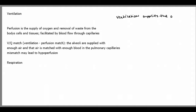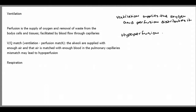You can think of ventilation as supplying the oxygen and perfusion as distributing it. The VQ match is when the alveoli, the tiny air sacs, are supplied with enough air and that air is matched with enough blood in the pulmonary capillaries. A mismatch may lead to hypoperfusion, also known as shock, which is the inadequate supply of oxygen and removal of waste from the body's cells and tissues.